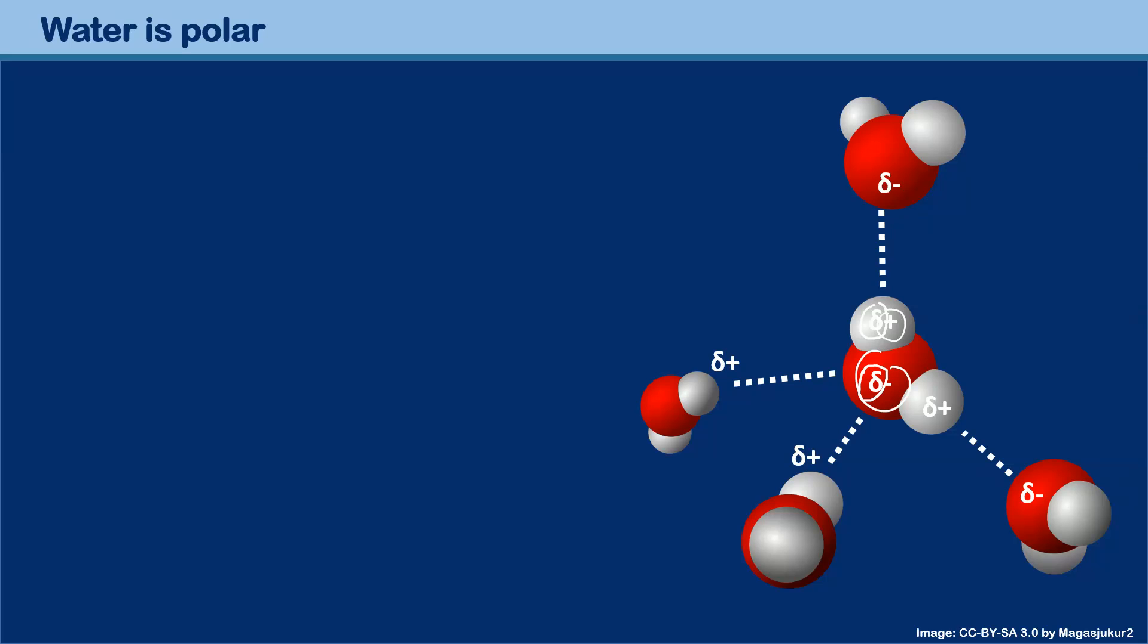And because we have over here a negatively charged oxygen from another water molecule, we see these dotted lines. And these dotted lines are supposed to represent hydrogen bonds.